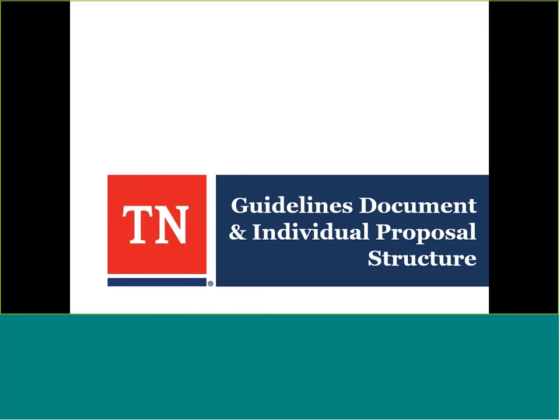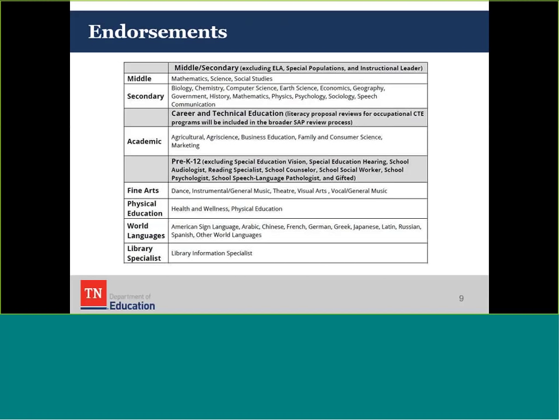Let's talk about the guidance document and individual proposal structure. It's helpful to have that guidance document in front of you. On the first page, you'll see a list of the endorsements covered for this particular proposal process, and there are some exceptions noted in the gray header bands. You'll see for middle and secondary there is a proposal process today, but it excludes ELA, special populations, and instructional leaders, as those are covered by previous or different proposal processes.